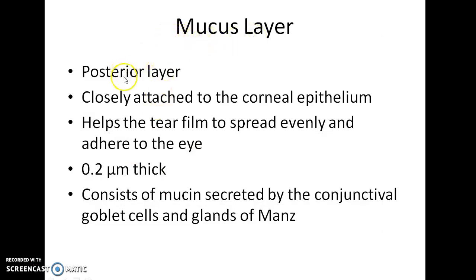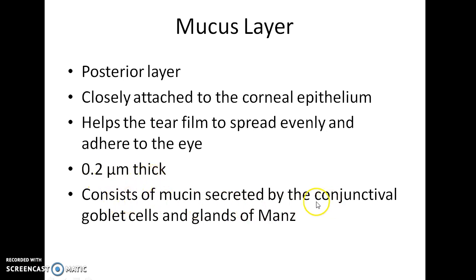Coming to the mucous layer, it is the posterior-most layer. It is closely attached to the corneal epithelium. It helps the tear film to spread evenly and adhere to the eye. It is around 0.2 micrometers in thickness, and consists of mucin secreted by the conjunctival goblet cells and glands of Manse.